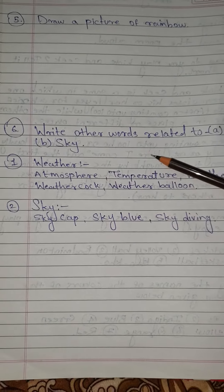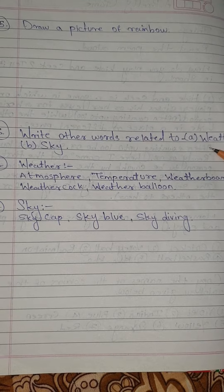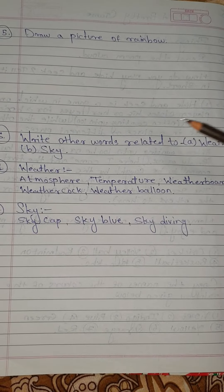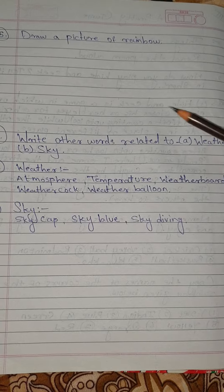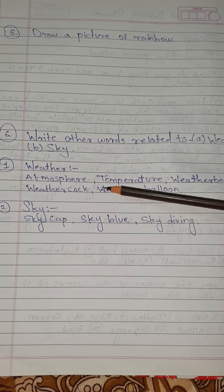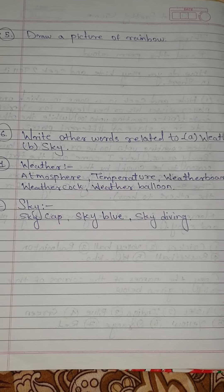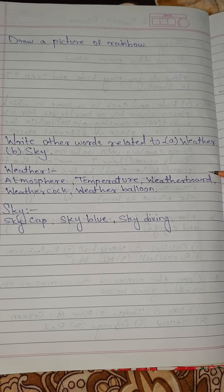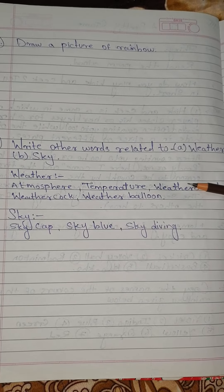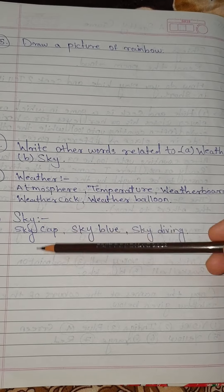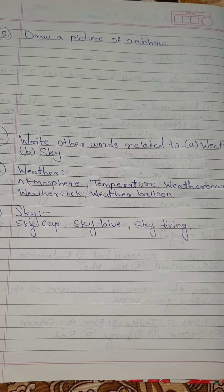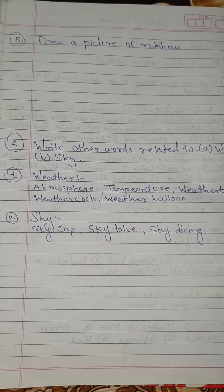Question No. 6: Write other words related to (a) weather and (b) sky. No. 1 — Weather: Atmosphere, Temperature, Weatherboard, Weathercock, Weather Balloon. Sky: Skygap, Sky Blue, Skydiving. Thank you.